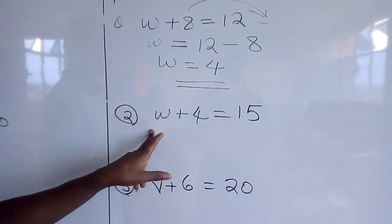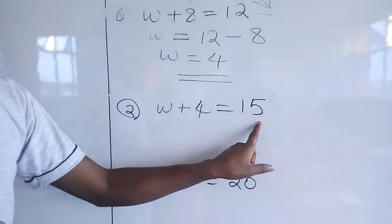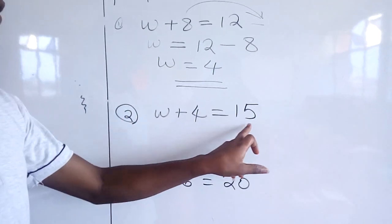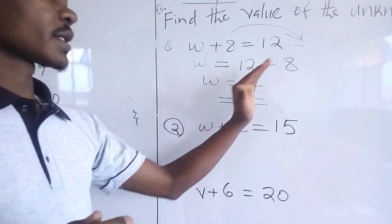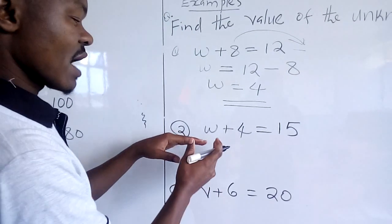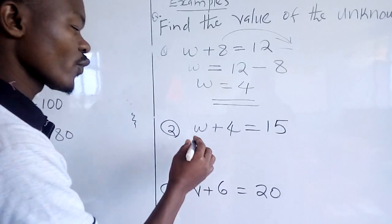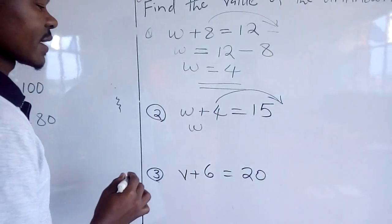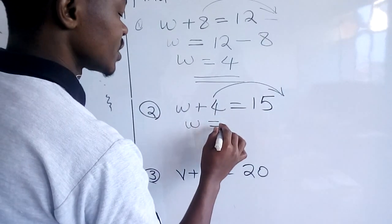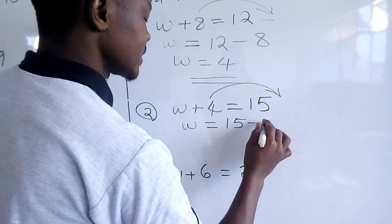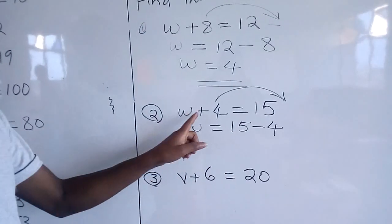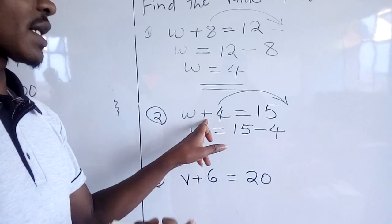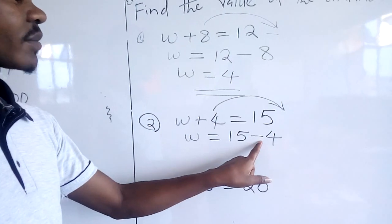Then we come to this other one. We have W plus 4 is equal to 15. What are we supposed to do? Take the whole number to the other side — the right hand side — and have the unknown on the left hand side. So we are going to have W; we collect this and take it the other side. If it crosses the equal sign, the sign changes. So we are going to have W is equal to 15 minus 4. Why minus 4? The moment this sign crosses the equal sign, the sign changes. If it is a positive sign and it crosses the equal sign, it becomes a negative.